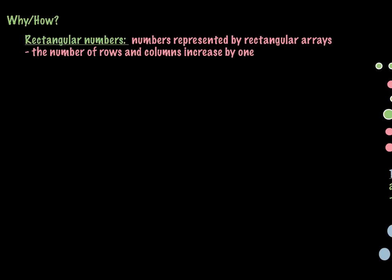For example, if I have this as my rectangular number, that means I have one row of two. If I'm trying to figure out what my next rectangular number is after this number, that means I am going to increase my row by one and increase my column by one. What I would get when I did that would be this.